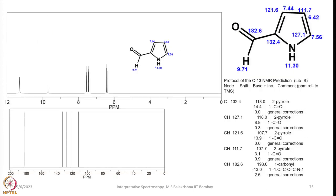Here is the same example with corresponding chemical shifts: 127.1, 111.7, 121.6, 132.4, and 182.6 ppm — all carbon signals are shown here. You can see distinct chemical shifts for each carbon atom when they are chemically and magnetically non-equivalent. Looking at the 1H NMR spectrum, a typical spectrum is shown for comparison.